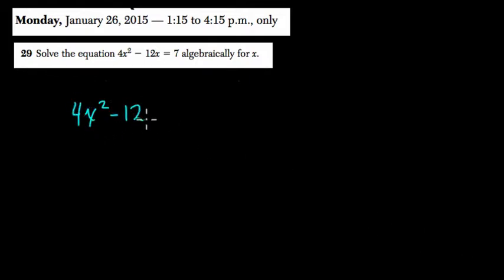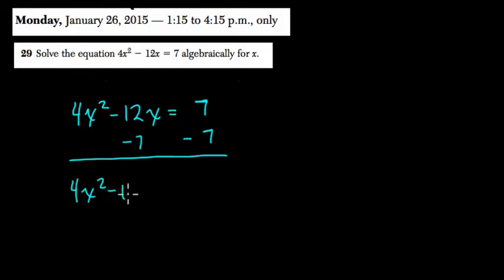So when I set this up, my first step is to get 0 on one side. So let's subtract 7 over here. It's the easiest approach for doing that. We have 4x squared minus 12x and then minus 7 equals 0.